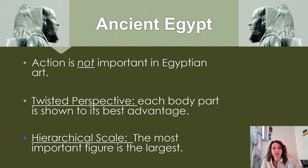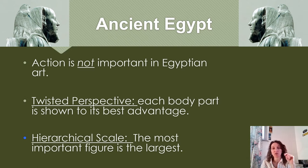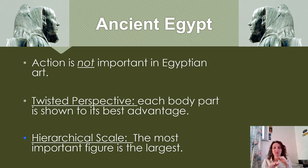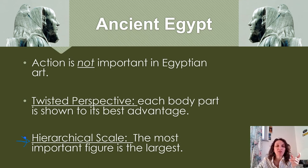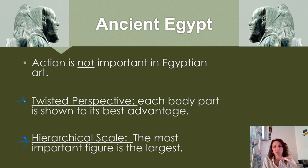There are a couple major points about ancient Egyptian art. We are not looking at it in a strictly chronological way. First: action is not important to ancient Egyptian art — keep that in mind as we go forward. Second is hierarchical scale, which we introduced with the Stele of Hammurabi — the most important figure is the largest. Third is twisted perspective, where each part of the body is shown at its best advantage.